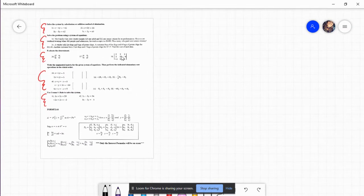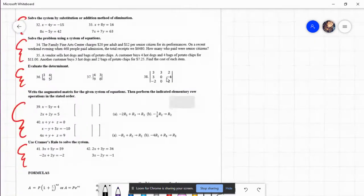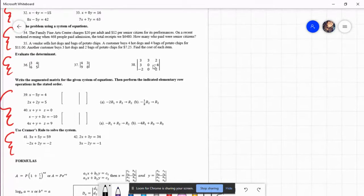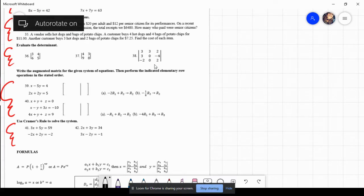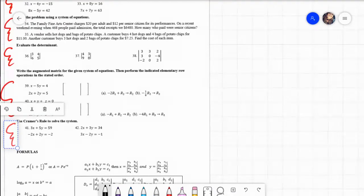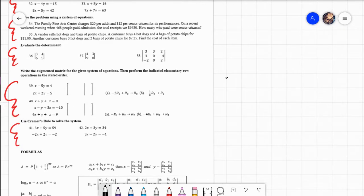Where we left off last time was we did 34 and 35 which was actually just creating our own system of equations. Hopefully those made sense and they're fairly understandable. Let me flip my laptop. Okay, so what we're going to do now is 36, 37, and 38. For problem 36 through 38, it says to evaluate the determinant.